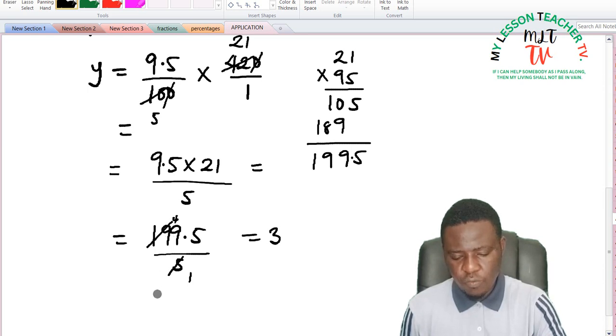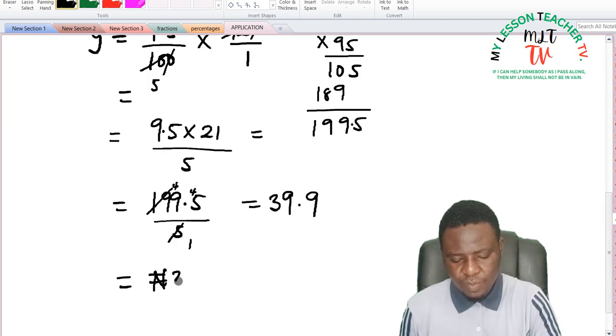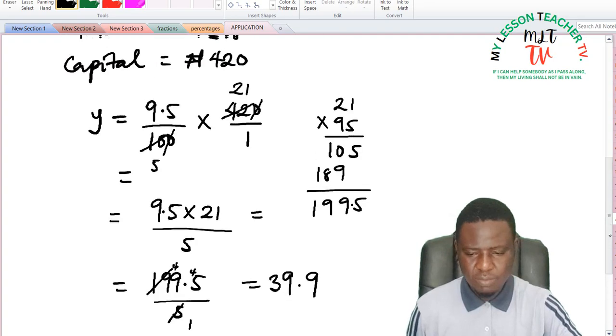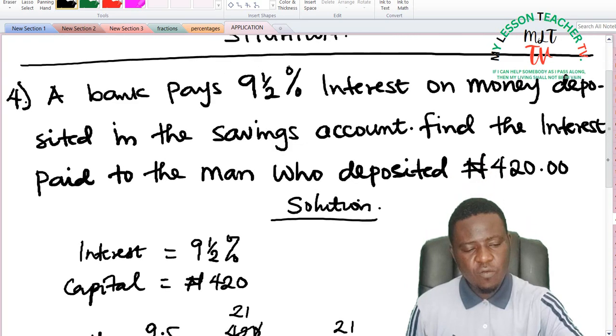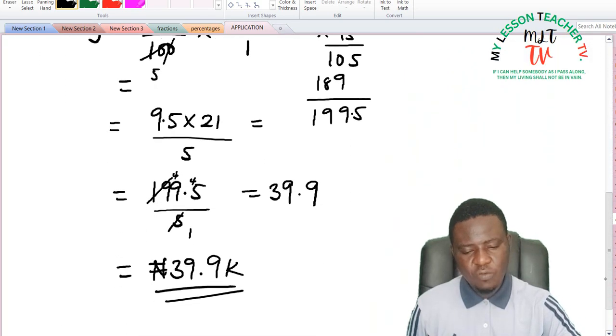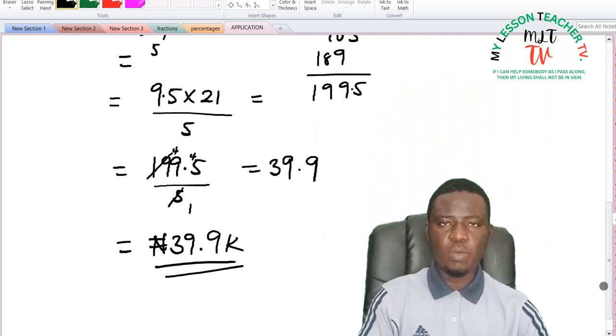So this is equal to 5 into itself is 1, 5 into 19 gives us 3 remainder 4, 5 into 49 is 9 times 4, and 5 into 45 is 9. So that the interest is said to be 39 naira 90 kubo. So this is what this man is going to get as his interest for saving 420 naira for an interest of 9 and a half percent. So the interest is said to be 39 naira 90 kubo.